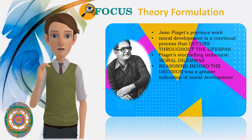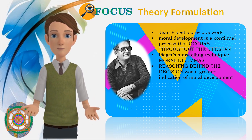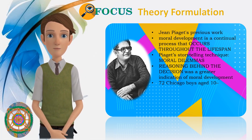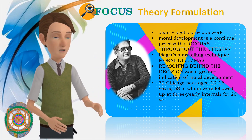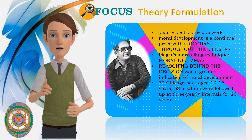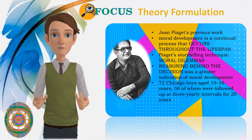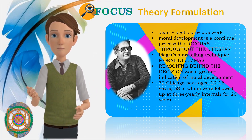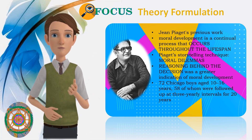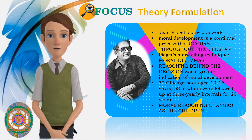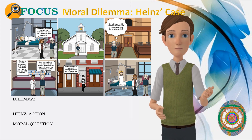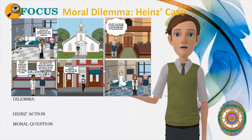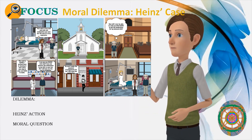By studying the answers from children of different ages to these questions, Kohlberg hoped to discover how moral reasoning changed as people grew older. The sample comprised 72 Chicago boys aged 10–16 years, 58 of whom were followed up at three-yearly intervals for 20 years. Each boy was given a two-hour interview based on 10 dilemmas. Kohlberg was interested not in whether the boys judged the action right or wrong, but in the reasons for the decision. He found that these reasons tended to change as the children got older. The main tool utilized by Kohlberg to gather his data was a storied dilemma.